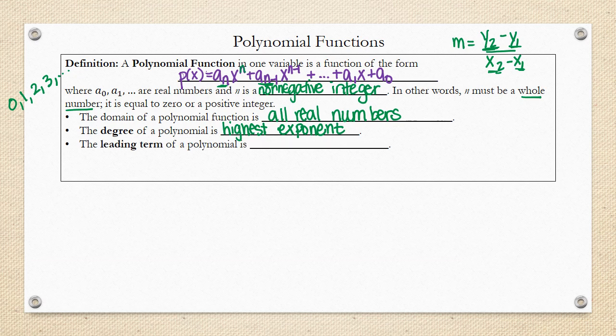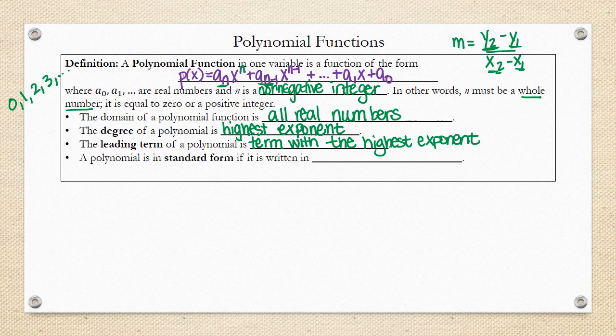The leading term of a polynomial is the term with the highest exponent. A polynomial is in standard form if it's written in descending order.